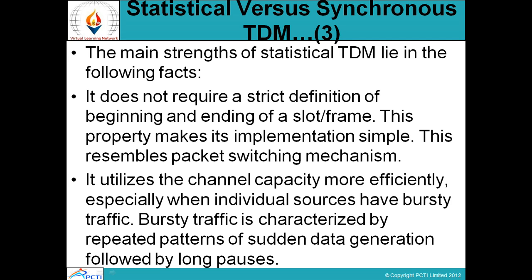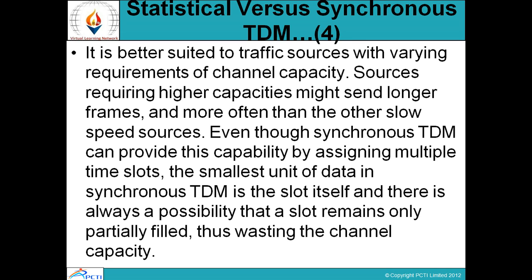Statistical TDM uses the packet switching mechanism and utilizes the channel capacity more efficiently, especially when individual sources have bursty traffic — statistical TDM के through channel का fully utilization किया जाता है। Bursty traffic is characterized by repeated patterns of sudden data generation followed by long pauses. It is better suited to traffic sources with varying requirements of channel capacity — sources requiring high capacity might send longer frames more often than other slow-speed sources।